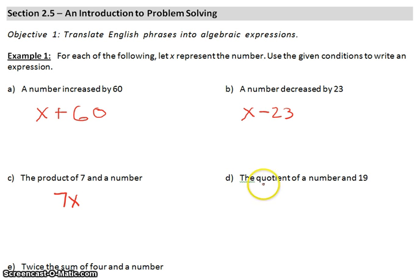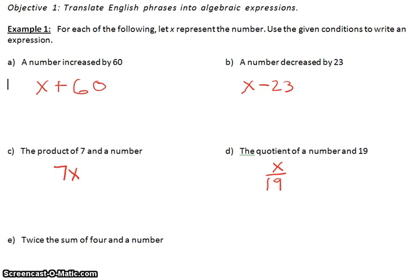For D, the quotient of a number and 19. Quotient means division. But since we are in Math 31, we can write this as a fraction. So, we will have X divided by 19. That is our quotient and a number.